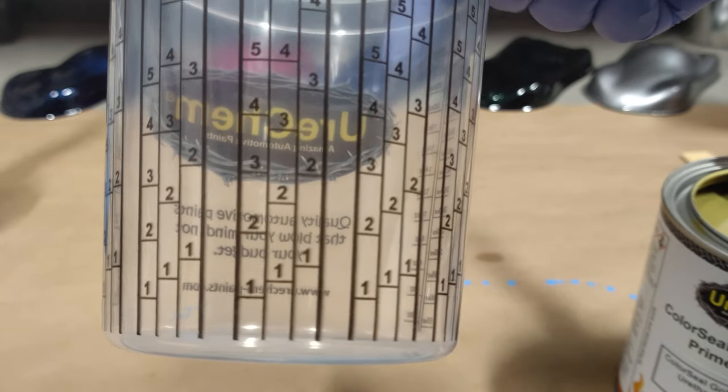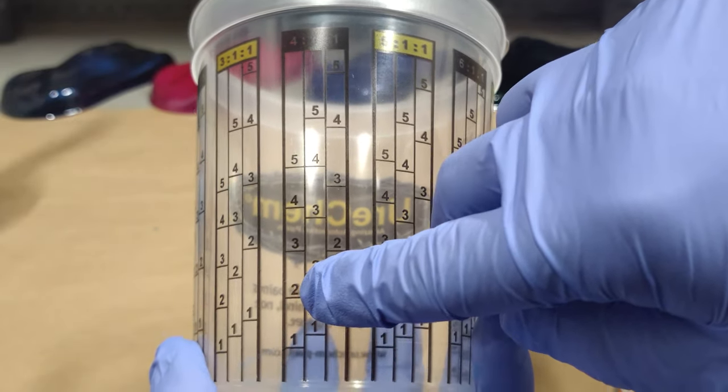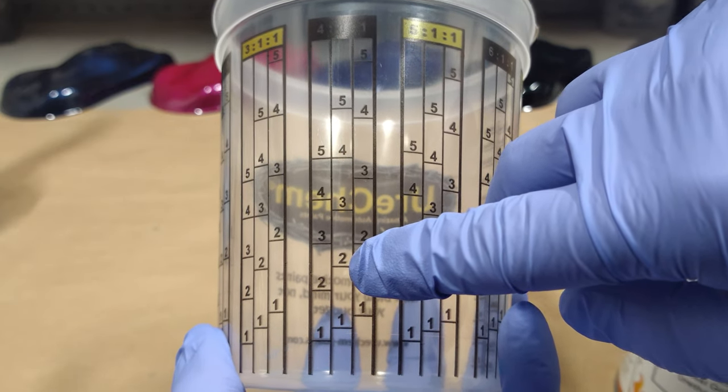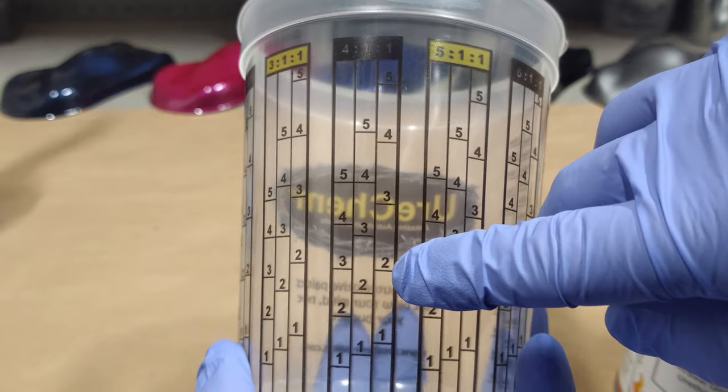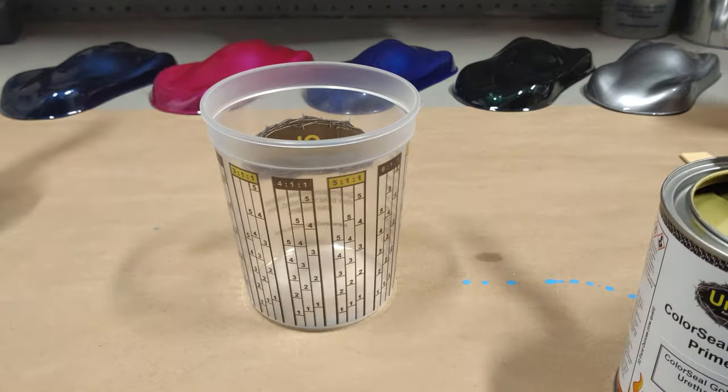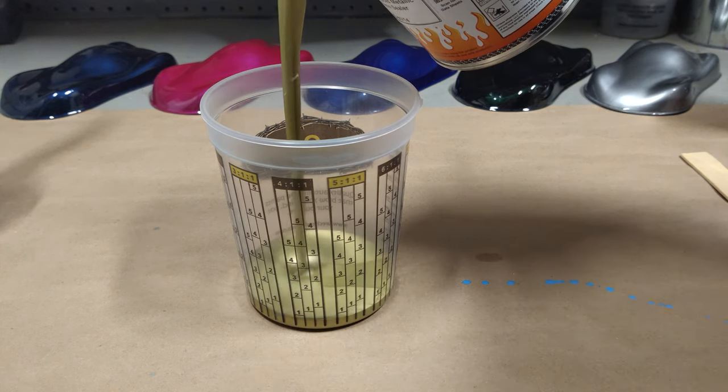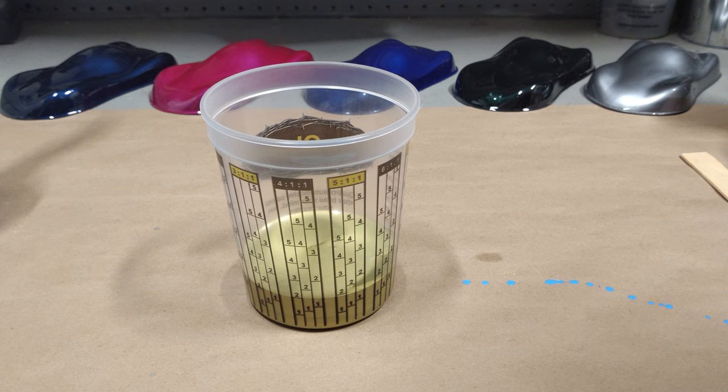Again, we'll work off the number two. So our first column, first row of the column, we're going to fill to this number two, going to go one column to the right, one row to the right, to the next number two, one row to the right again, to the following number two. Okay, all staying in this four to one to one column. And there's, go to number two with the primer. The next two do not have to go in a particular order.